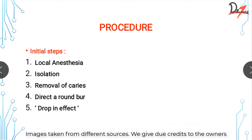The next step is isolation. We tend to neglect this — rubber dam is not a luxury, it's essential. A separate topic could be devoted to isolation, but remember it is very important when doing access opening. Then comes the most important and most neglected step: removal of caries. The presence of caries is the biggest reason for endodontic failure. No matter what, even if you are losing tooth structure, remove all caries before proceeding.